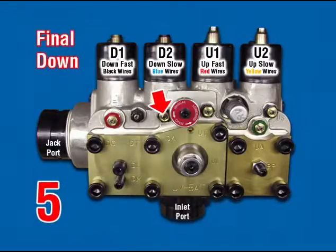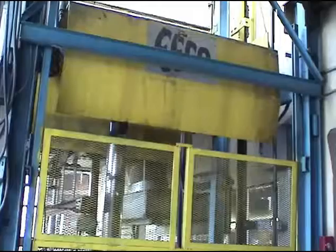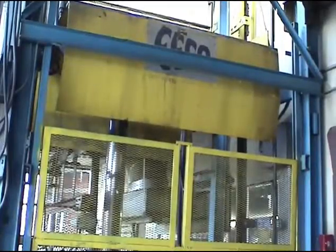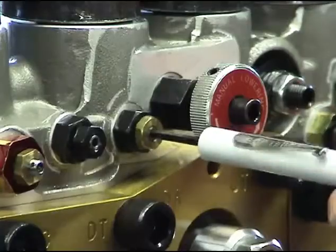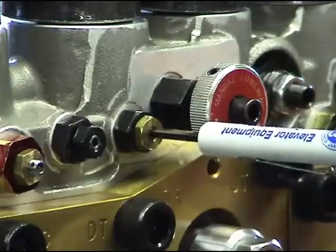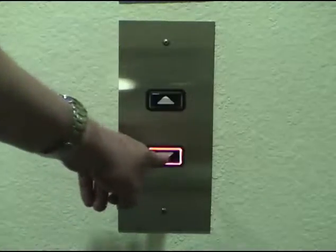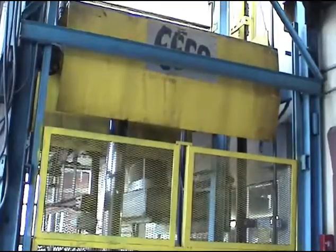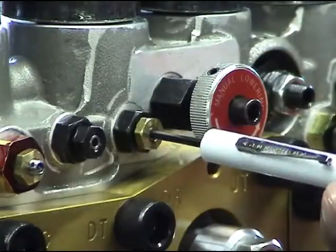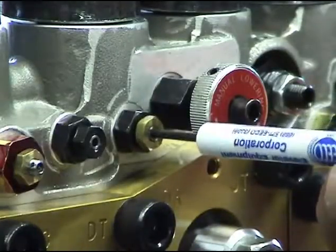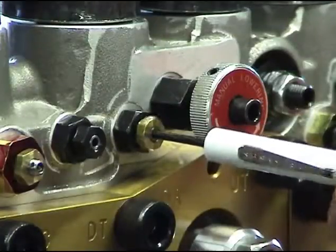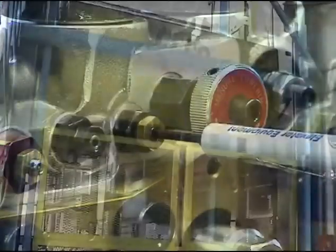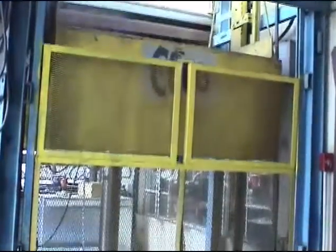DA — down acceleration. Car at upper floor with no load. Turn DA clockwise to stop. Register a down call. The car should not move. Turn DA slowly counterclockwise until the car breaks away from the floor, then turn DA clockwise for slower or counterclockwise for faster until down acceleration is satisfactory.